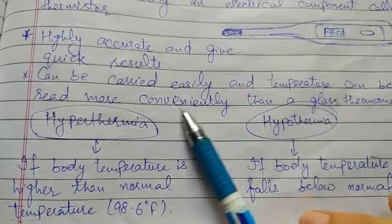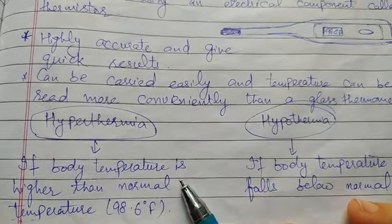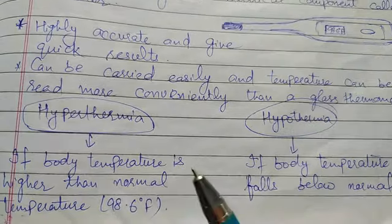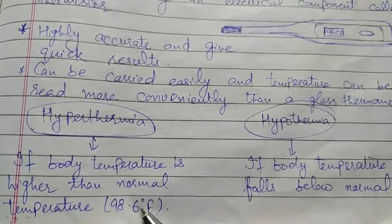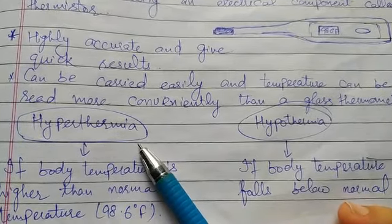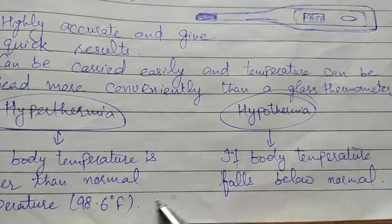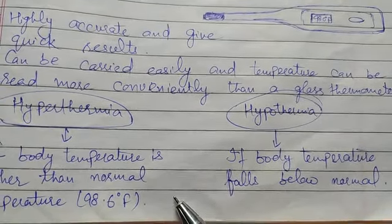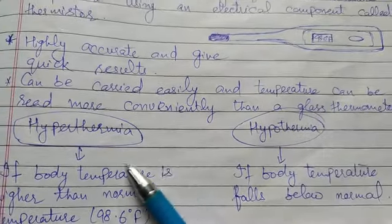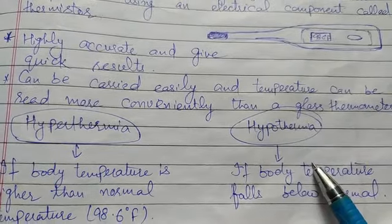There are two terms related to body temperature: hyperthermia and hypothermia. If the body temperature is higher than the normal temperature — that is, when we have a fever — that condition is called hyperthermia. If the body temperature is lower than normal, that is below 98.6°F, that condition is called hypothermia.